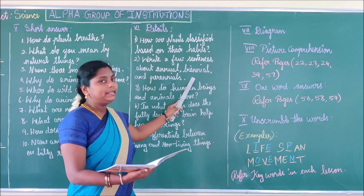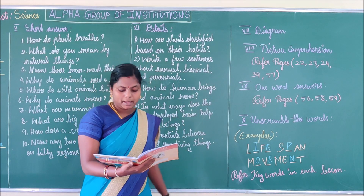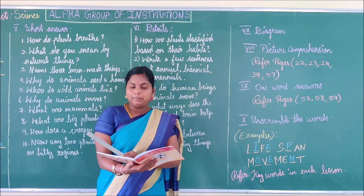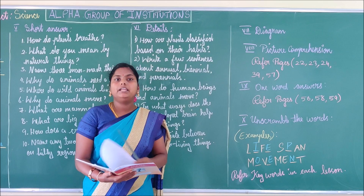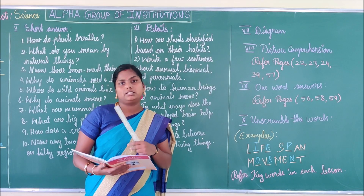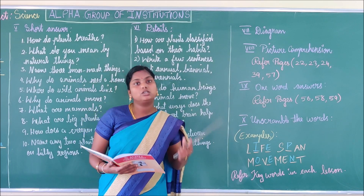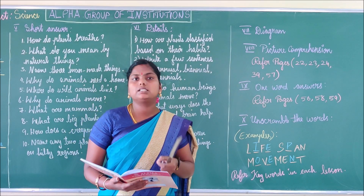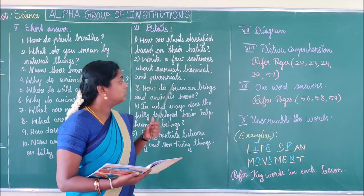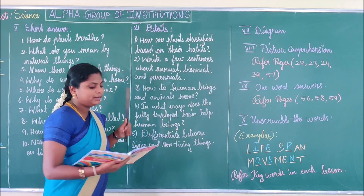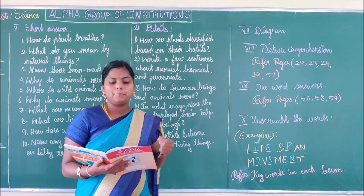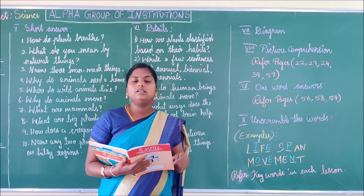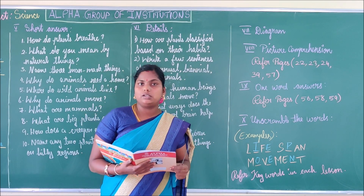Biennials: A biennial generally completes its life cycle in two years. For example, carrot and brinjal.